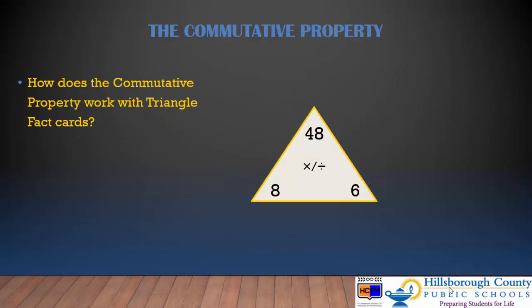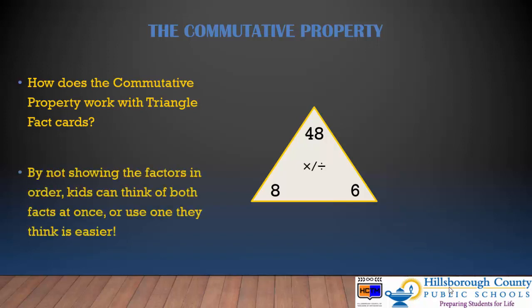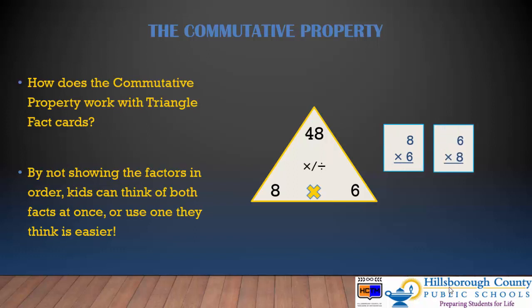How does the commutative property work with your triangle fact cards? By not showing the factors in order, kids can think of both facts at once, or they can use the one that they know or they think is easier. So on this triangle fact card, we can work on both the facts 8 times 6 and 6 times 8, and knowing both of those will result in the product of 48.